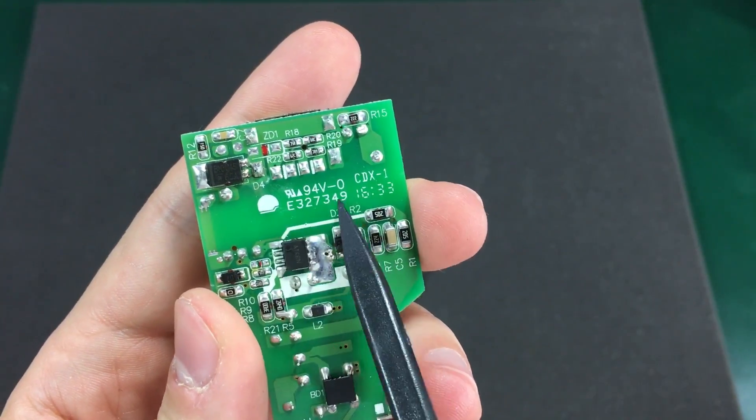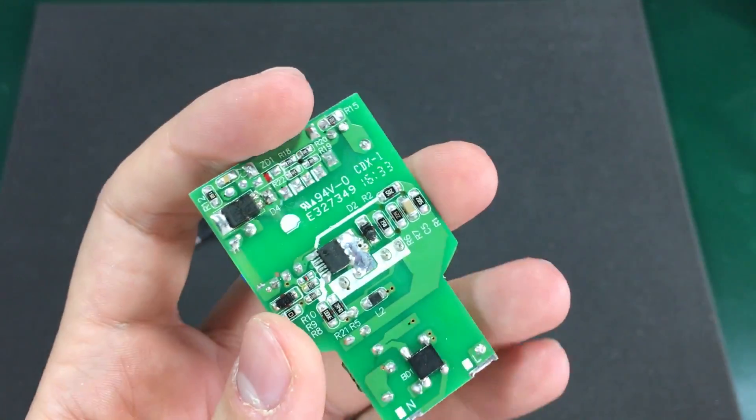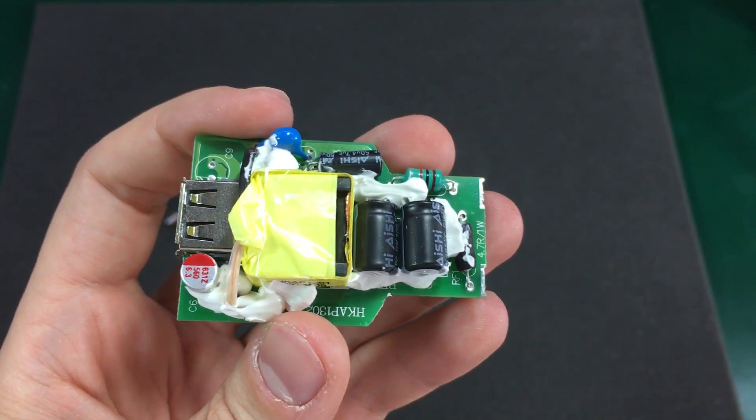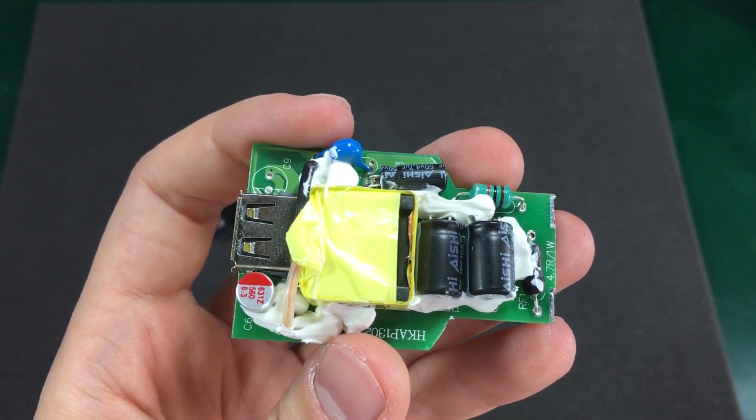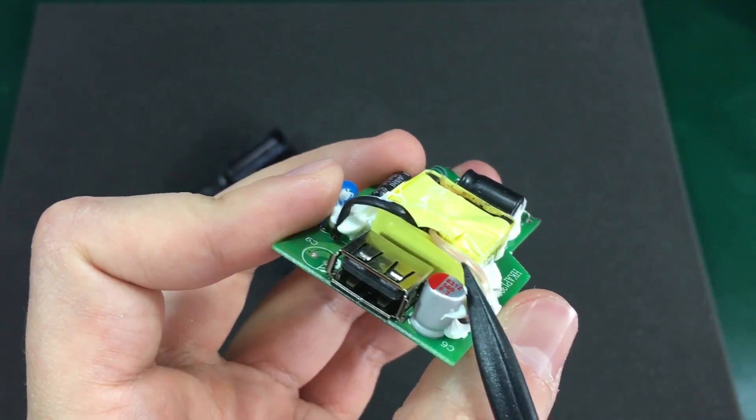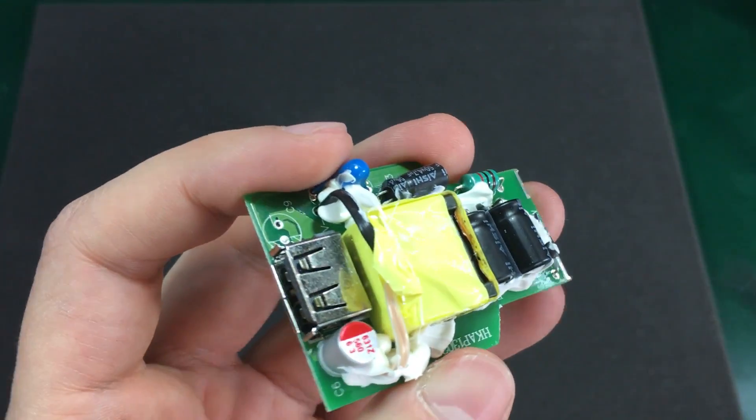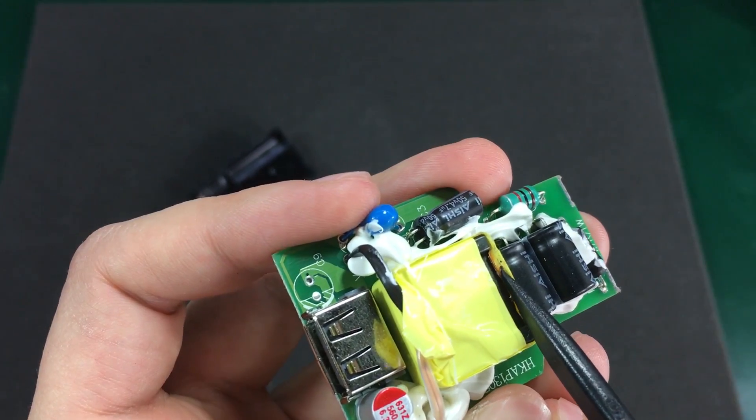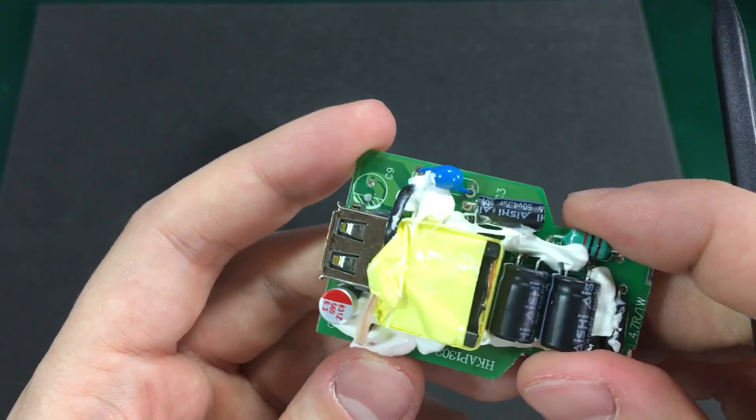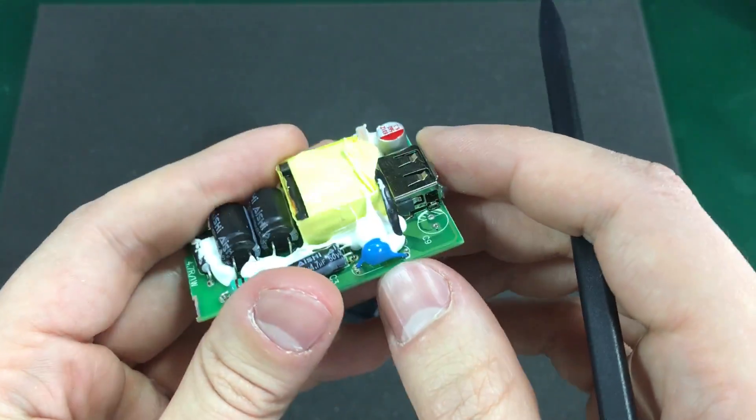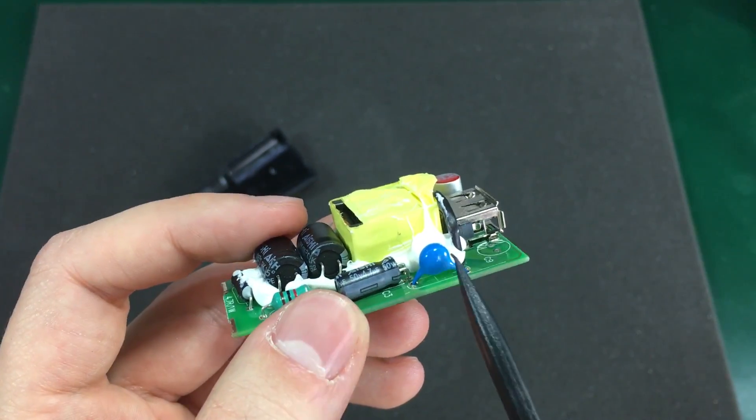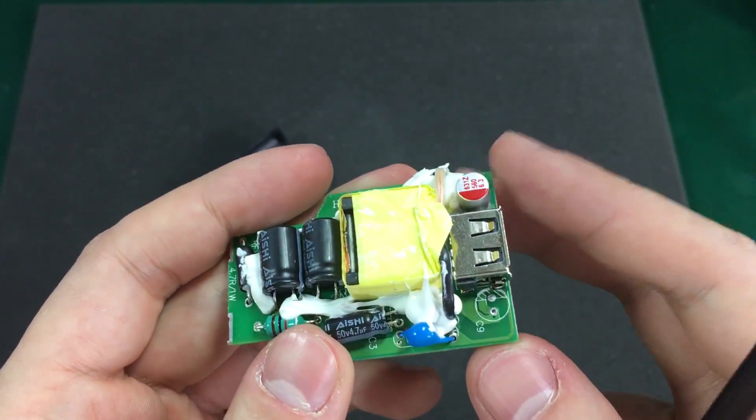I think this is the UL listing for this module, so it must have those regulatory listings for Lidl to be able to sell these in the EU. The transformer looks to be very good quality. We can see double insulated wires on the secondary side, and I can also see a bit of copper foil in there wrapping the transformer around just to isolate for noise emissions and immunity. We have an X rated cap between the primary and the secondary.